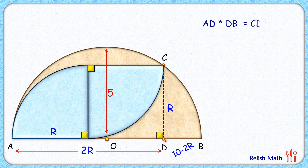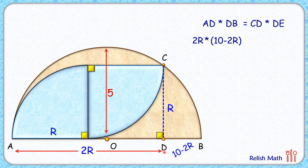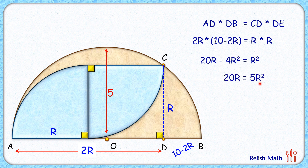Applying the intersecting chord theorem (power of a point), we get AD times DB equals CD times DE. So 2r times (10 minus 2r) equals r times r. Opening the bracket on the left-hand side gives 20r minus 4r² equals r². Taking minus 4r² to the other side gives 20r equals 5r². Cancelling r from both sides, we get r equals 4 centimeters.